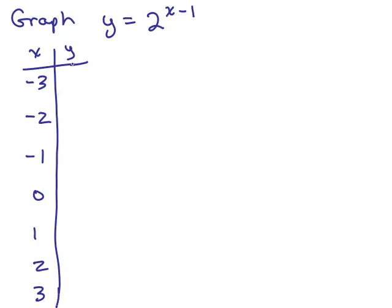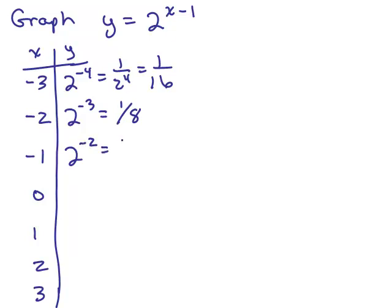All right, when I put in negative 3, I get 2 to the, well, if I'm putting negative 3 for x, that's 2 to the negative 4, and that's 1 over 2 to the 4th. It's going to be 1/16th, a small number. When I plug in negative 2 for x, I get 2 to the negative 3, which is 1 over 2 cubed, or 1/8th. When I plug in negative 1 for x, I get 2 to the negative 2, which is 1 over 2 squared, which is 1/4th. When I put in 0 for x, I get 2 to the negative 1, which is 1/2.